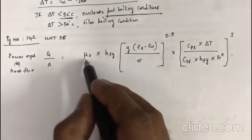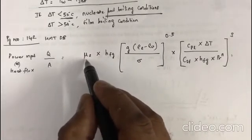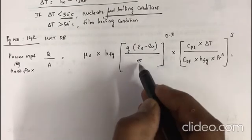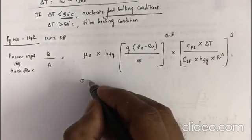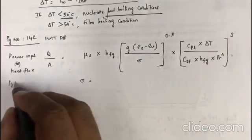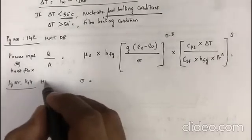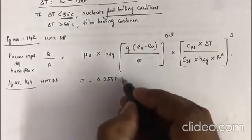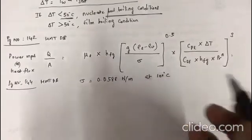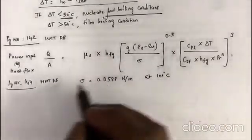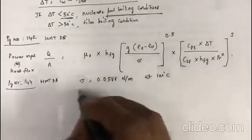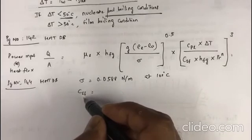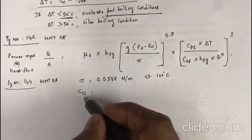So now we have almost all the values here: μl is the dynamic viscosity of the liquid, hfg we have, g is gravity, ρl is density of liquid, ρv is density of vapor, σ is surface tension. This is available from page number 144 of the same HMT data book. You will find that σ = 0.0588 N/m at 100°C.